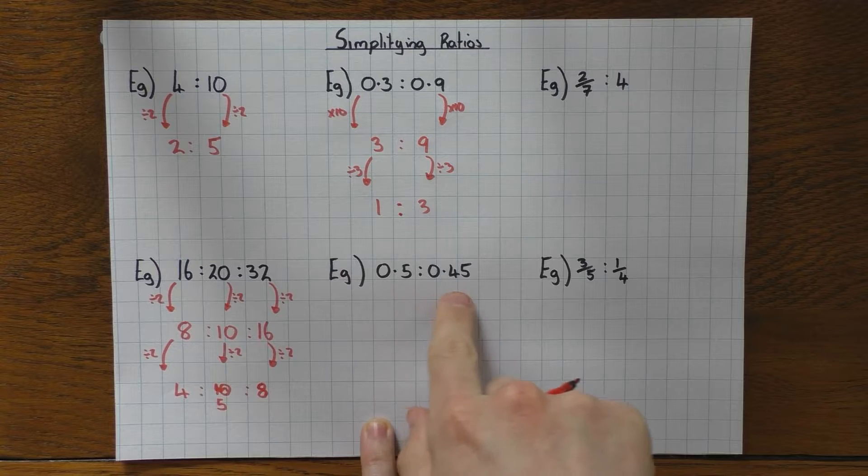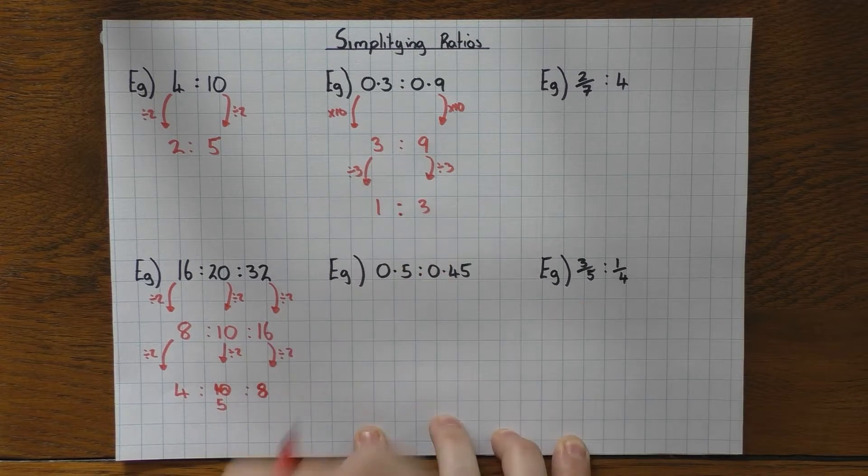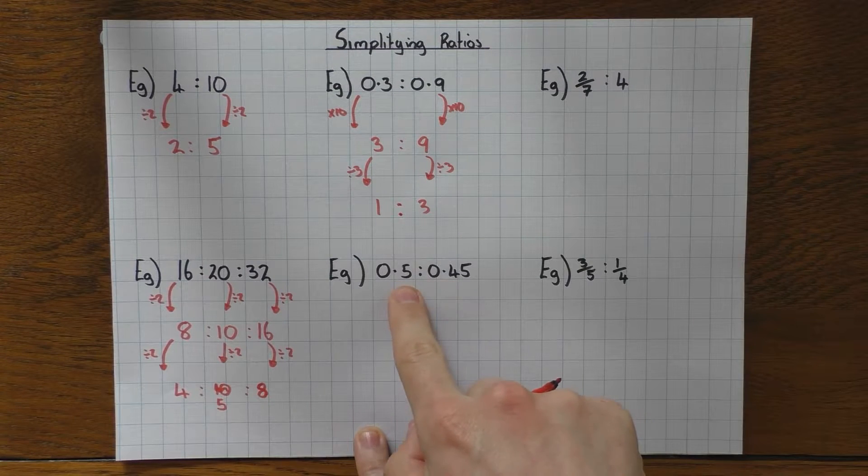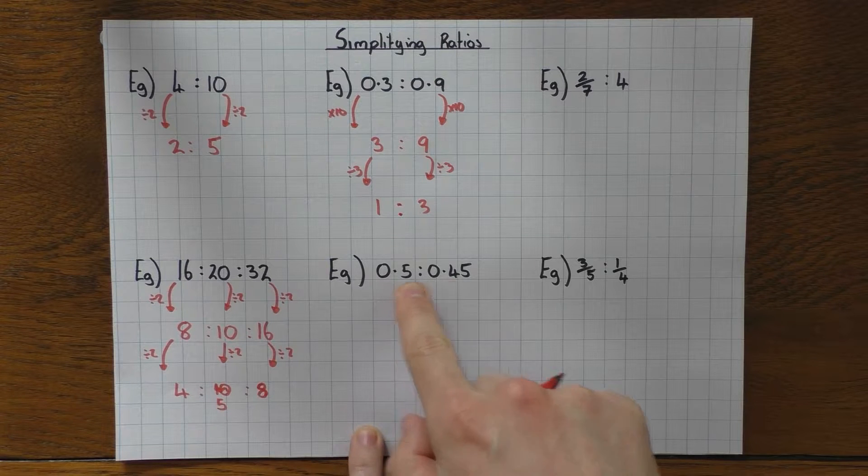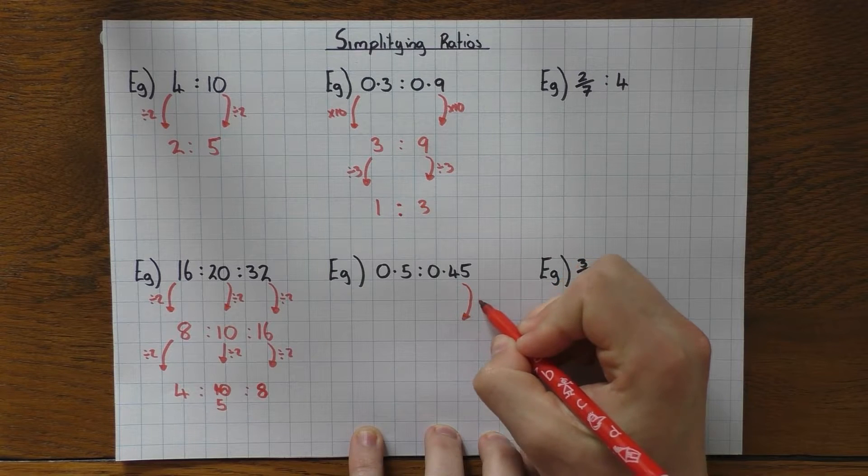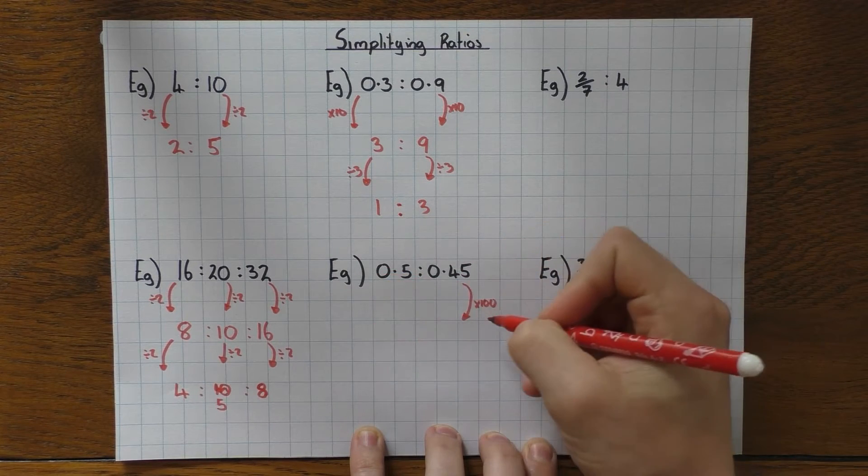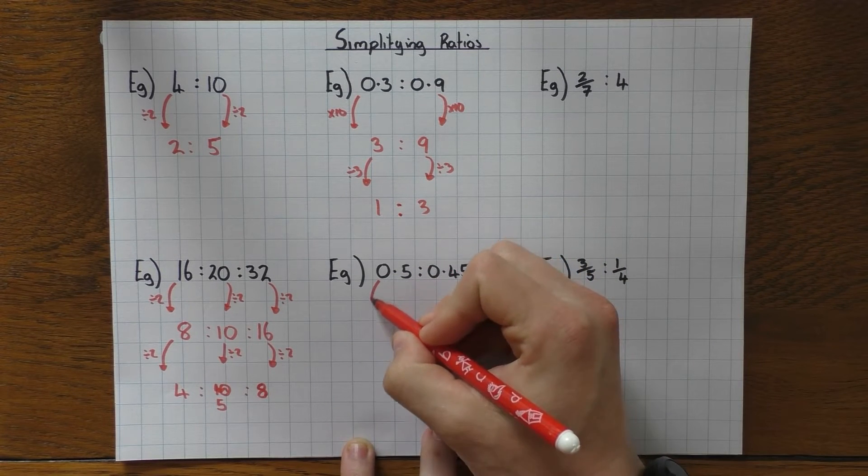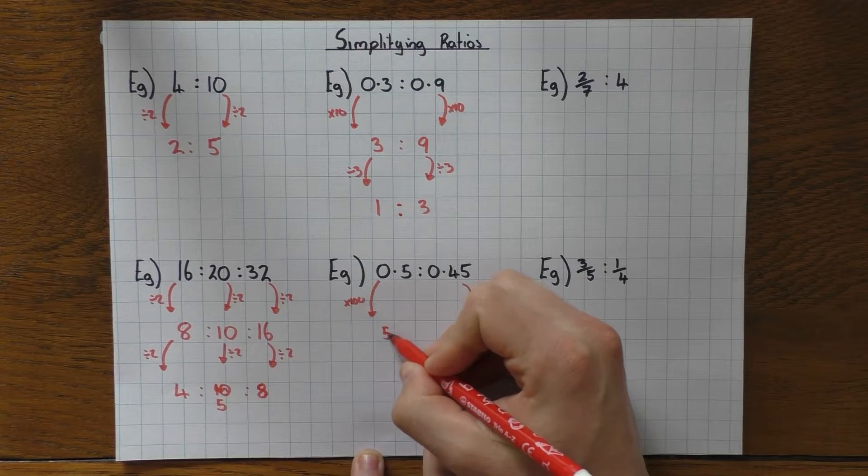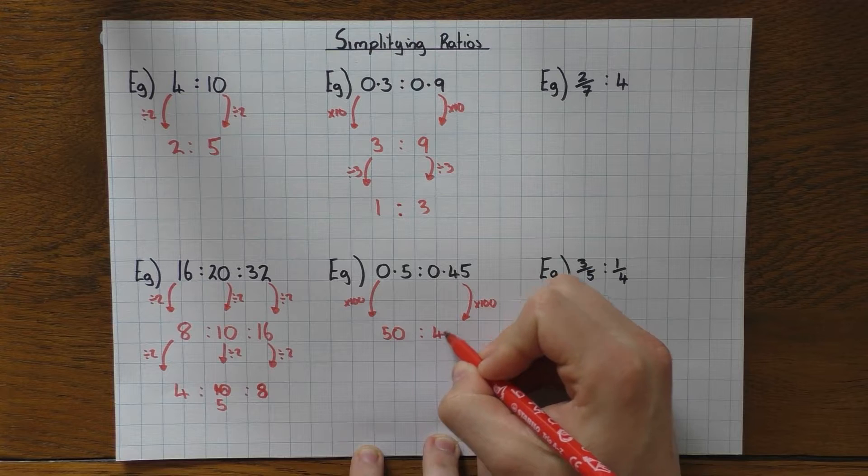Same idea with this one, but slightly different. I've got 0.5 and 0.45. I want to make them all whole numbers and then simplify it. But this one here has two decimal places. This one here only has one. So to make this into a whole number, I'm going to have to times it by 100. And I'm going to have to times this one by 100 as well, because I times this one by 100. Keeps it the same. So 0.5 times 100 is 50. And 0.45 times 100 is 45.